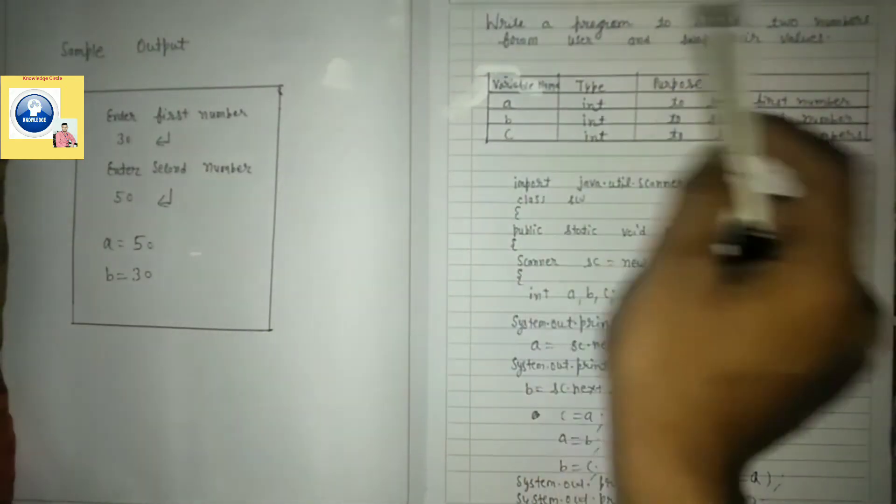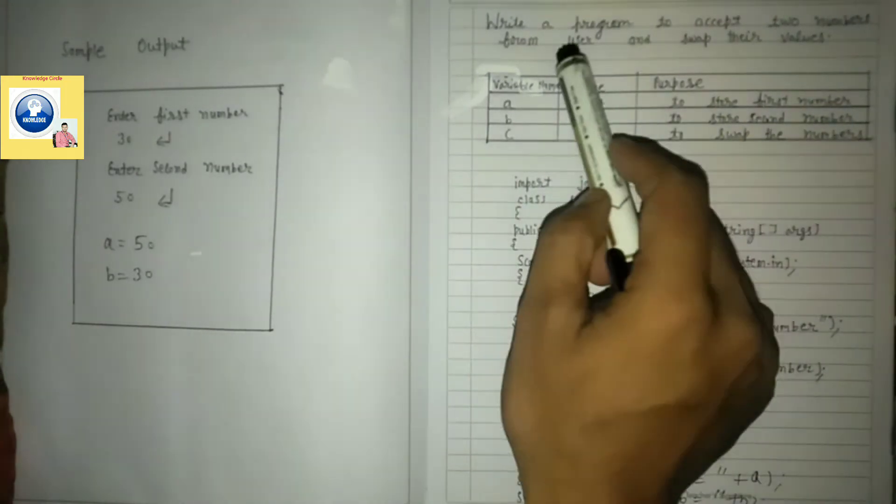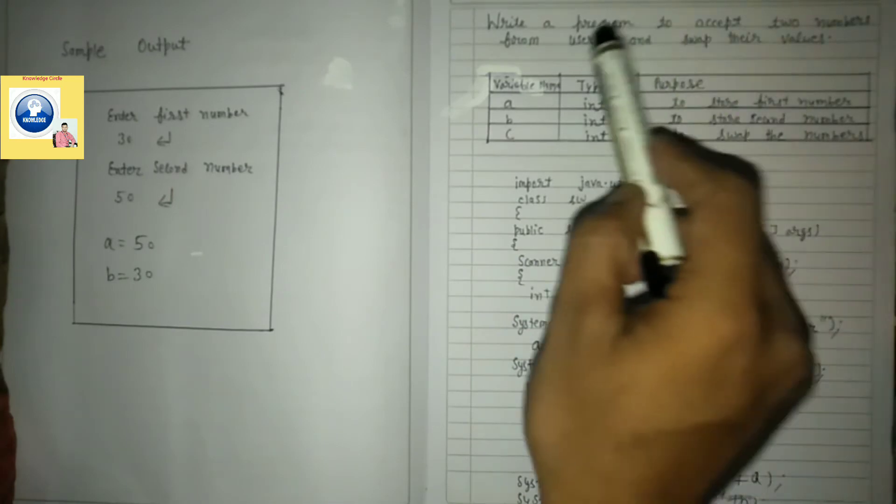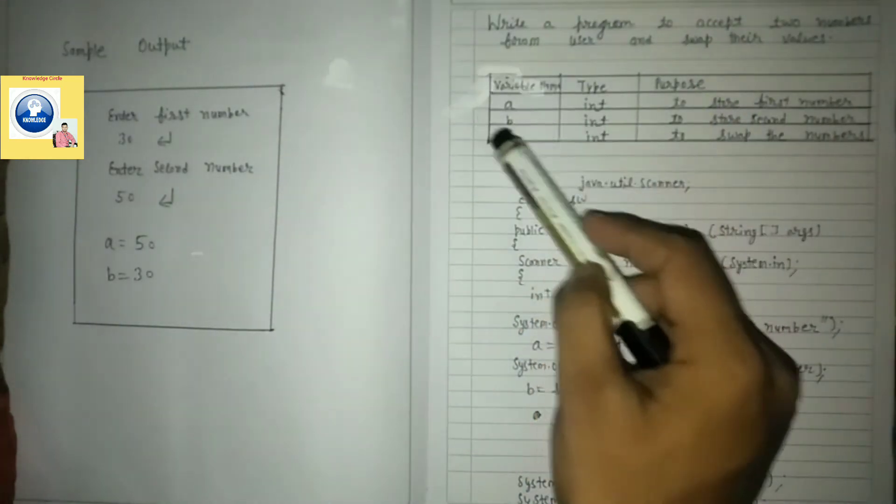After the question you have to write the variable description. You have to write the heading here, it is not mentioned here. You will write your variable description, then you will make a table.